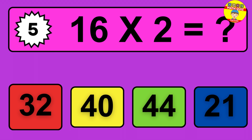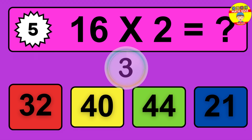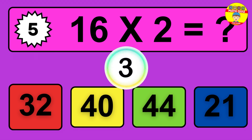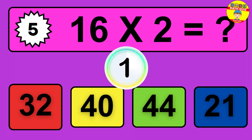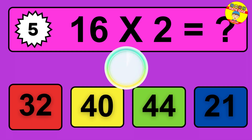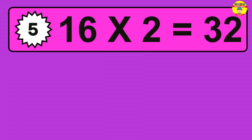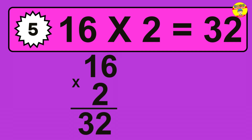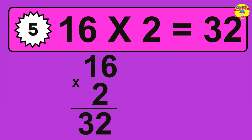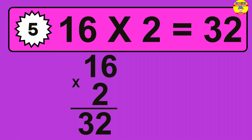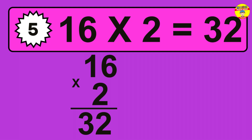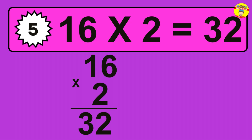Question 5. 16 times 2 equals what? The answer is 16 times 2 is 32. To calculate, we have 16 groups with 2 balls each one. So, how many balls do we have? 32 balls.